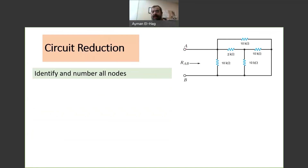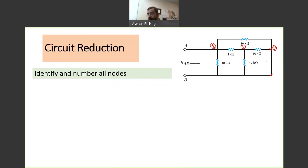We want to find the resistance between A and B. So this is a node — I'll call it number 1. This is another node. Remember, to identify two different nodes, there should be an element between them. Then here is a third node, so we have 1, 2, 3. Going down, this point, this point, and this point are the same node — number 3 — because there is no element between them. If there were elements, we would increase the number of nodes.